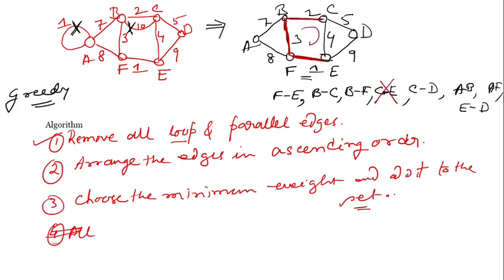CE is excluded. Next, CD with weight 5 can come - no problem. Then AB with weight 7 - why not? It's the minimum available. AB can come. Now check whether all the vertices have been visited.